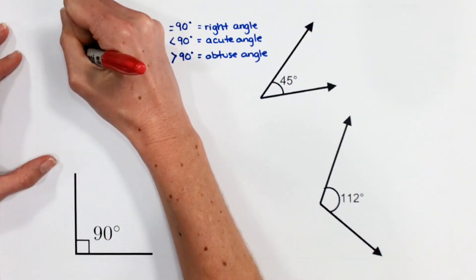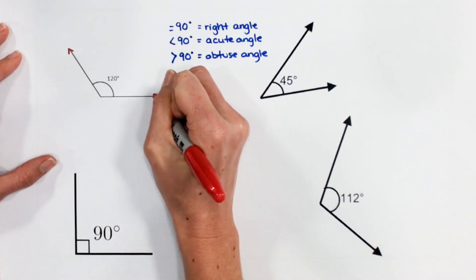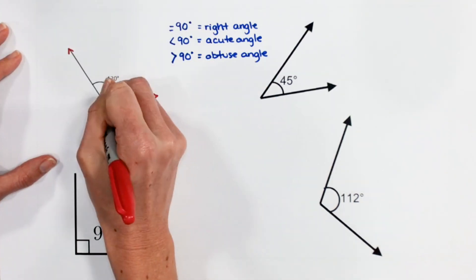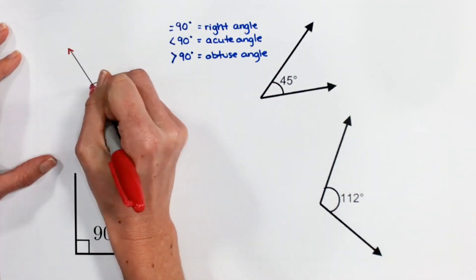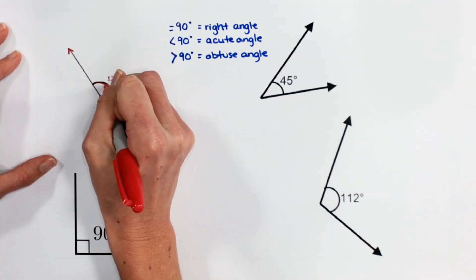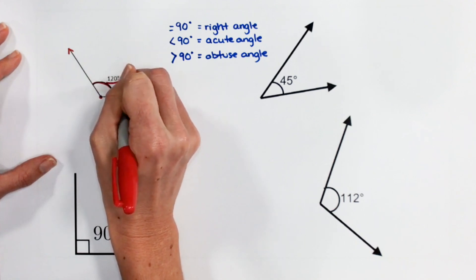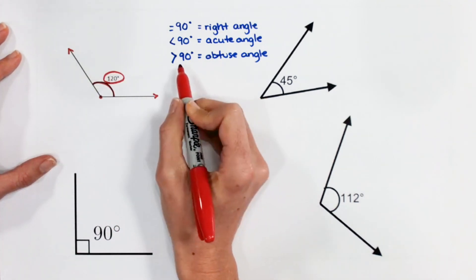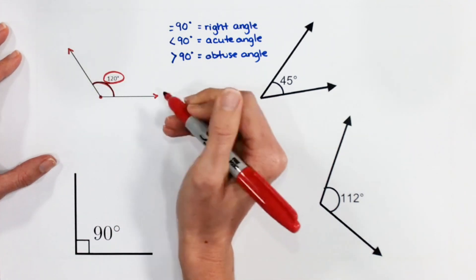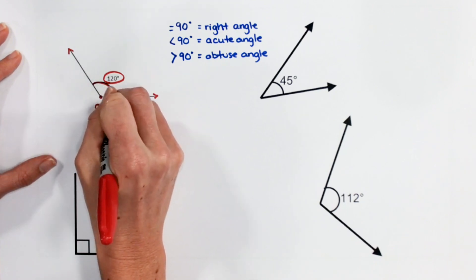So let's go ahead and classify them. I see here I've got a ray, another ray, endpoint, and my angle measures at 120 degrees, which is greater than 90. So this angle is obtuse.